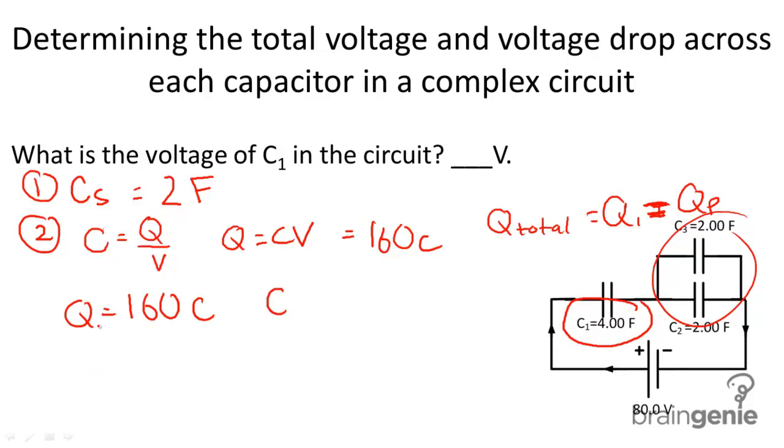And then we have the capacitance. C1 is equal to 4.00 farads. So all we need to do to determine voltage is, again, go back to the standard equation. C equals Q divided by V. Solve for V. I get that V equals Q over C.